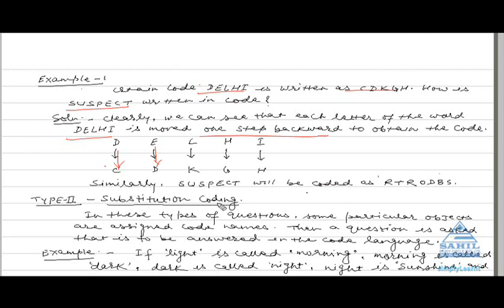Type 2: Substitution coding. In substitution coding, some particular objects are assigned code names. Then a question is asked that is to be answered in the code language. We will discuss substitution coding with the help of an example. If light is called morning, morning is called dark, dark is called night, night is called sunshine, and...